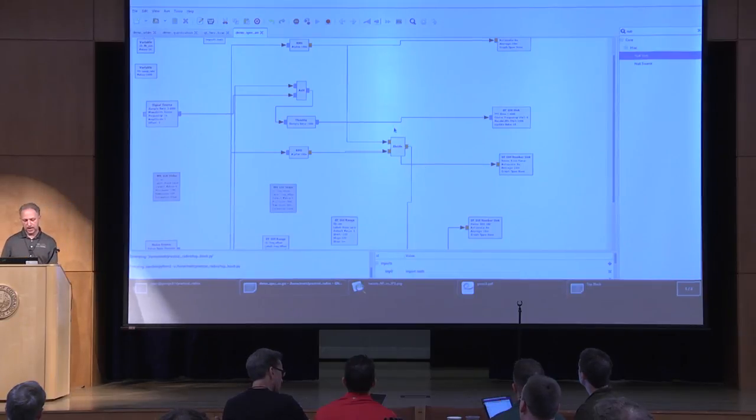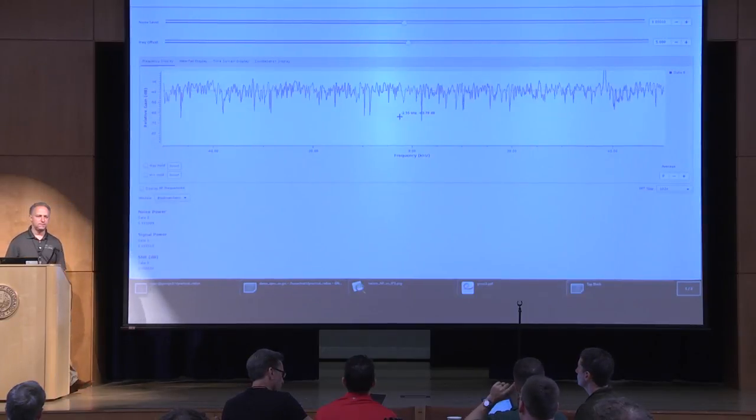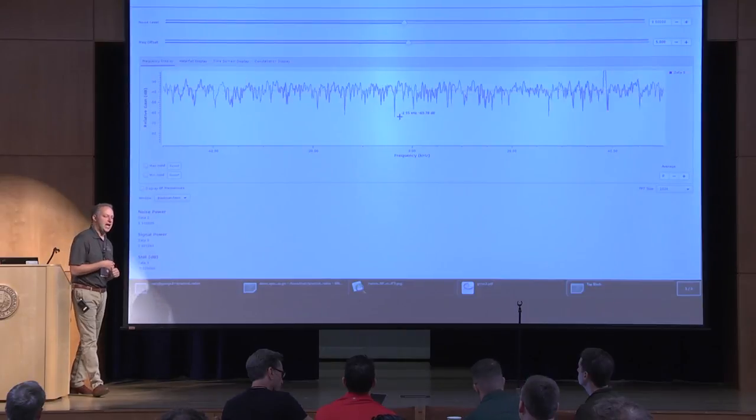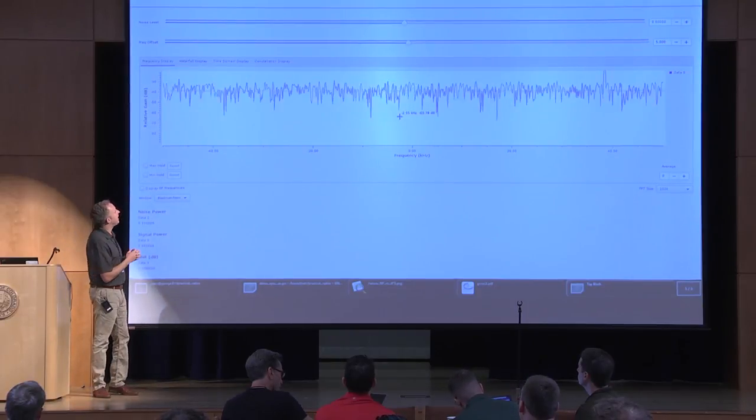And if you look at the GNU radio graph, you can see how we generate this, a signal source, a noise source. We add it. We also use some RMS blocks to measure it and divide it and to send it to the number sinks. So that just gives you an idea of how we measure signals and the like.